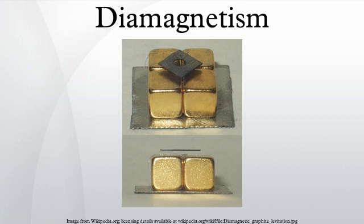Diamagnetism, to a greater or lesser degree, is a property of all materials and always makes a weak contribution to the material's response to a magnetic field. For materials that show some other form of magnetism, the diamagnetic contribution becomes negligible. Substances that mostly display diamagnetic behavior are termed diamagnetic materials, or diamagnets.